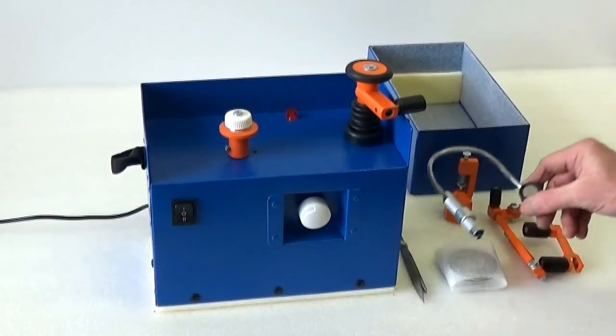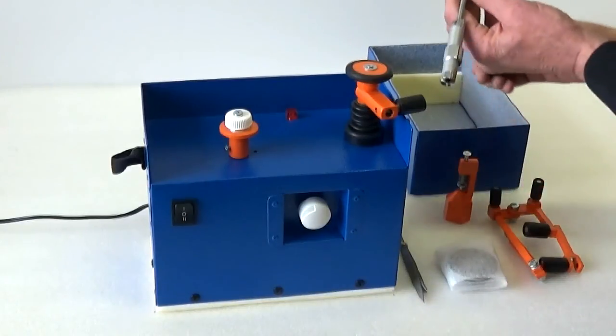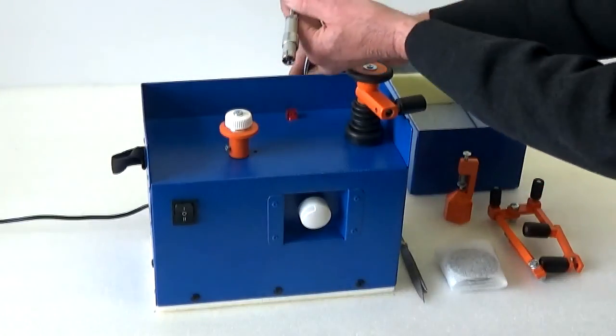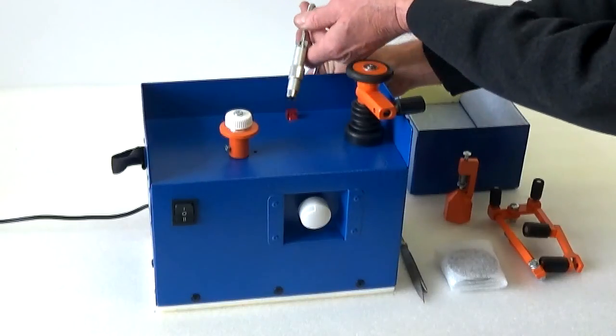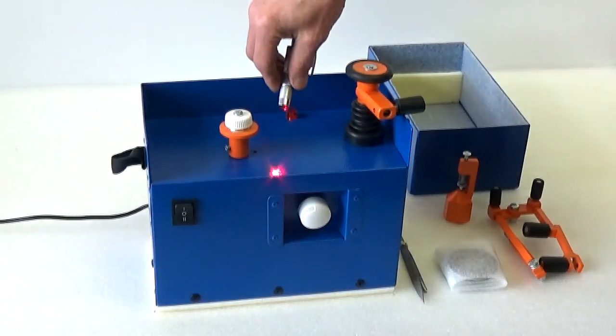The laser flashlight with magnetic holder can be set in any comfortable place. To turn on the light, you should turn the clutch.